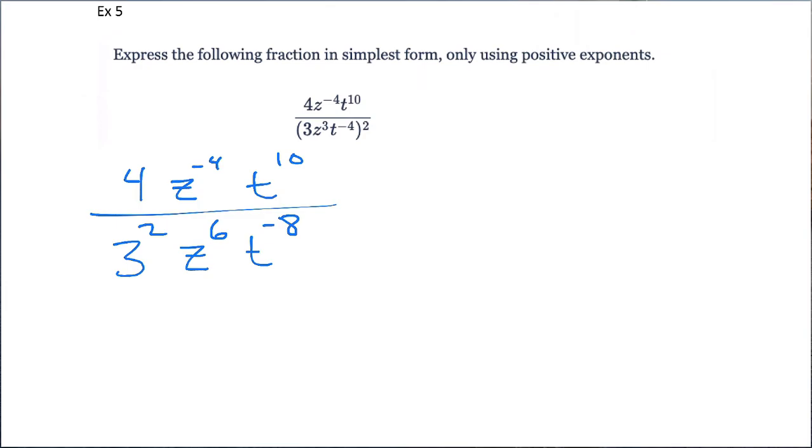Okay. We'll keep on going on this. This is 4 over 9. That's a reduced fraction, because 3 squared is 9. This is going to be z to the negative 4 minus 6, t to the 10th minus negative 8. We continue this. 4 ninths. That's as reduced as we can get. This is going to be z to the negative 10th, t to the 18th, because 10 minus a negative 8 is like adding 8.